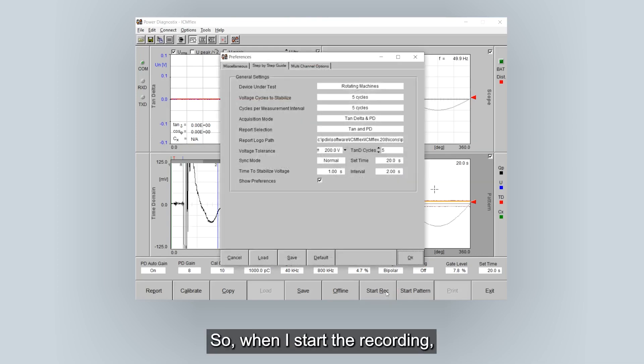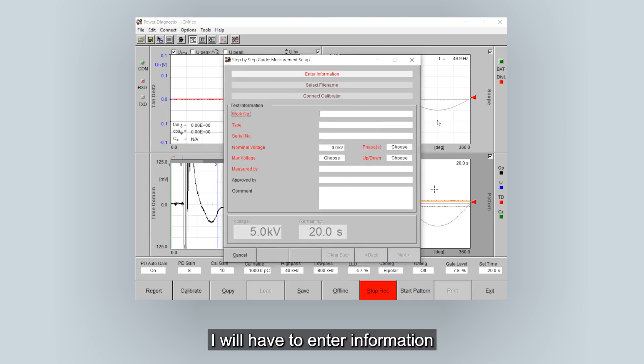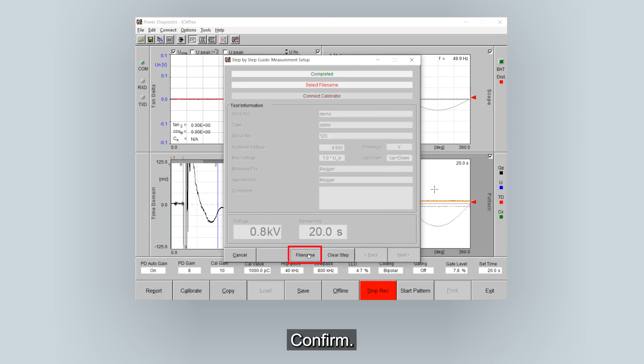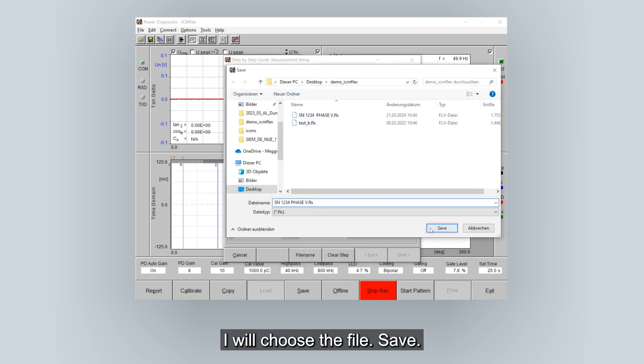So when I start the recording I will have to enter information like work number. Confirm. I will choose the file. Save.